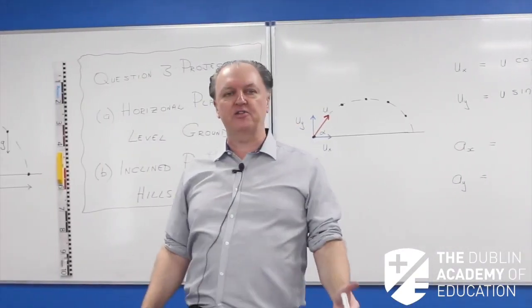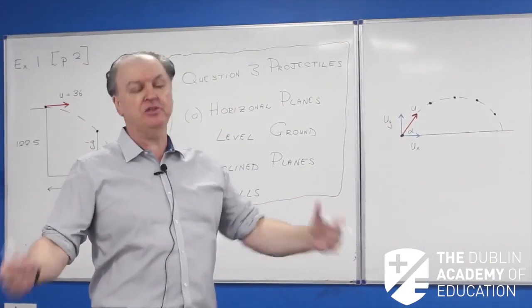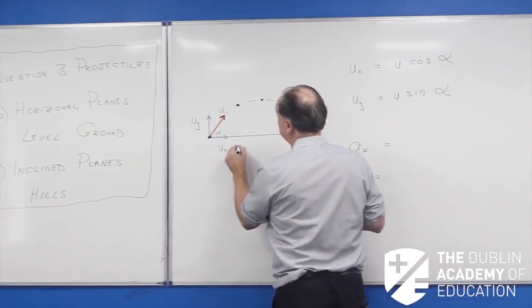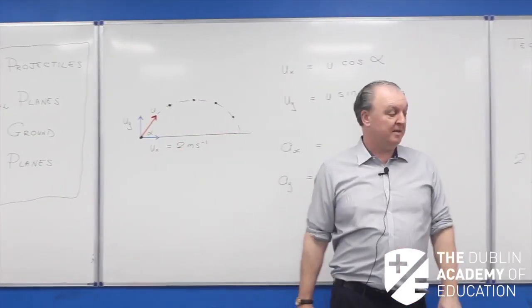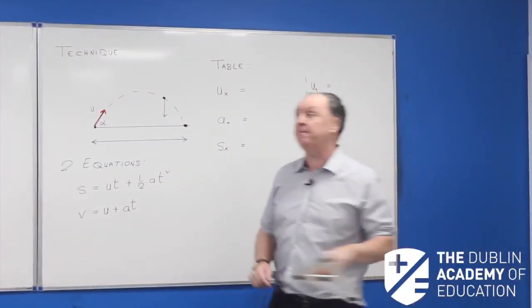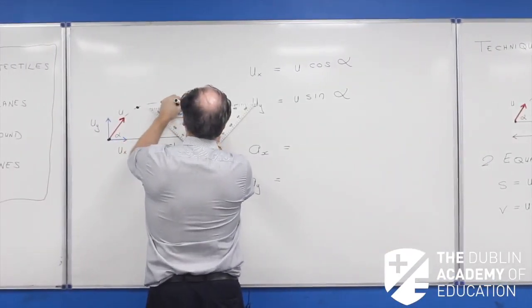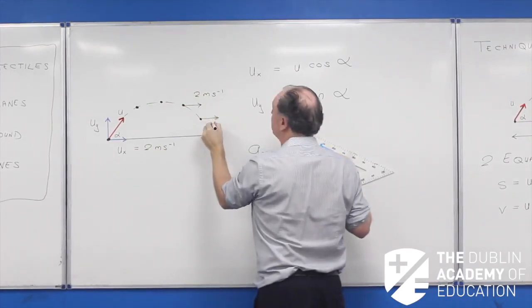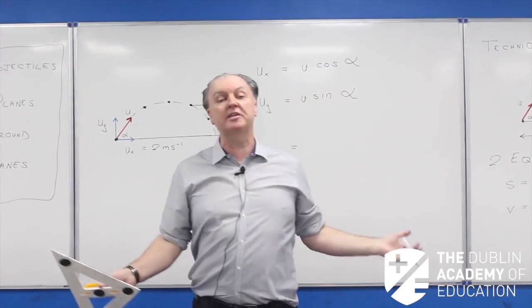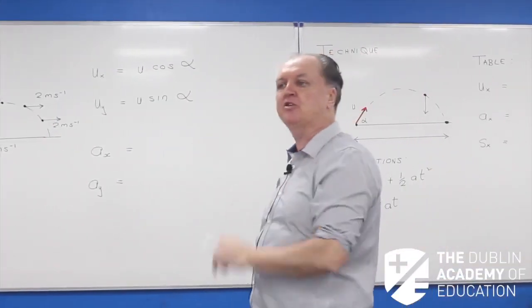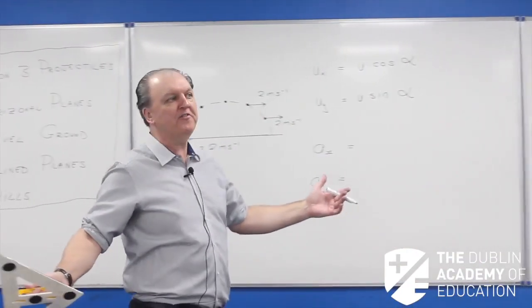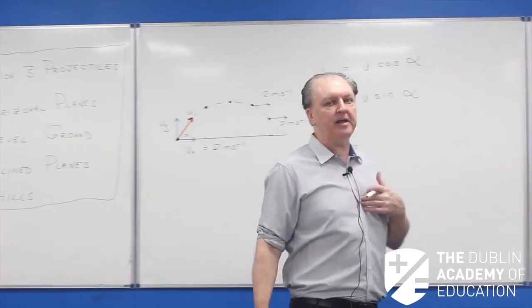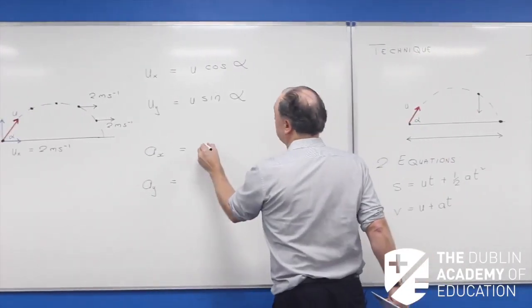The X and Y components do not affect each other — they're independent. For example, if Ux is 2 meters per second, it maintains that speed all the way across the journey. There's no acceleration in the X direction — no wind behind it to speed it up, no friction to slow it down. So whatever speed it has at the beginning, it continues all the way to the end. The acceleration in the X direction, Ax, is zero.